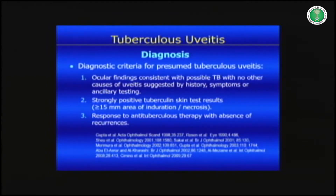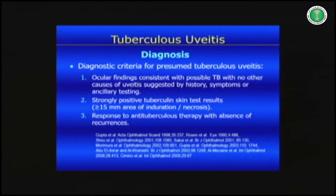The second criterion is a strongly positive tuberculin skin test. We use a cutoff of 15 millimeters of induration with necrosis — you must measure induration, not erythema. The third and most important criterion is the patient's response to anti-tuberculous treatment: if the patient responds with no recurrence after completing the course of ATT, you know for sure this is tuberculosis. These are the three criteria we and others rely on.